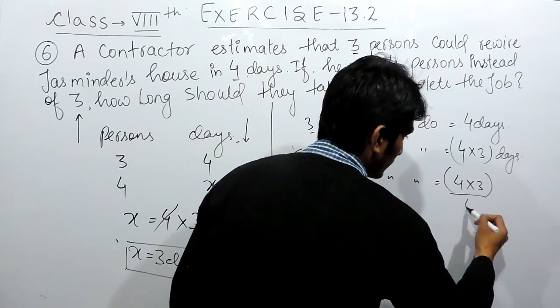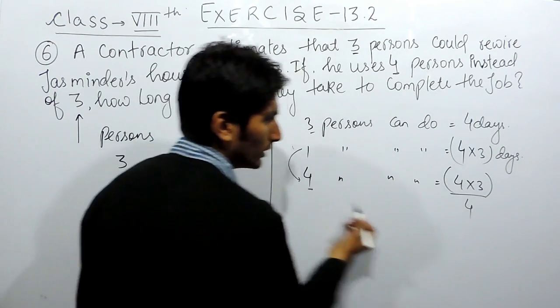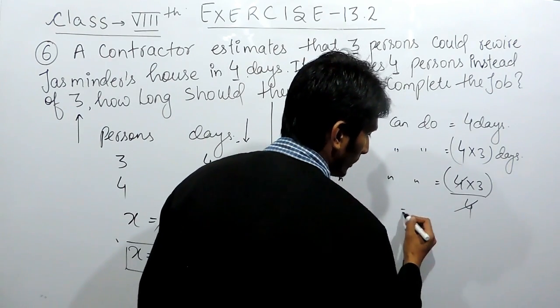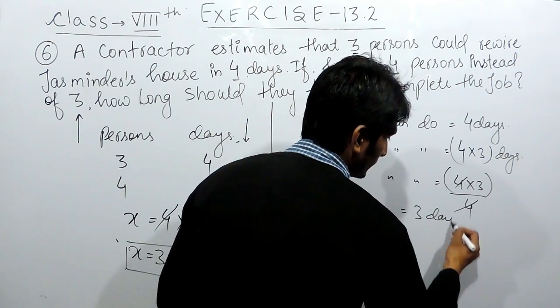So to decrease, you have to divide this by 4. So, 4 can be cancelled with 4. And the answer will be 3 days.